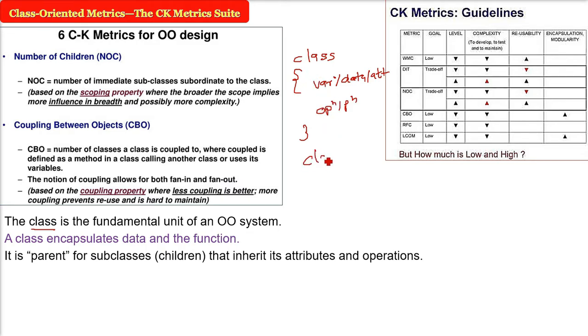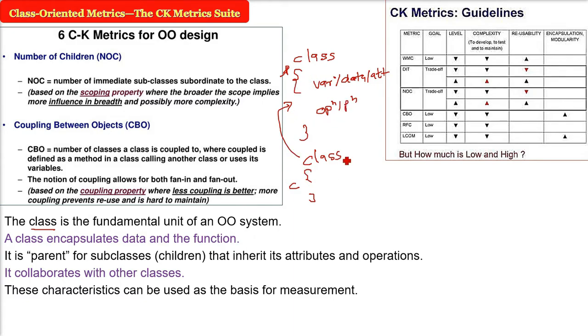There can be a parent class from where the subclasses can be inherited. Inheritance means taking the attributes and operations as is. There can be another class which can be a subclass of a superclass or parent, and these classes all collaborate with one another. So these characteristics can be used as the basis for measurement and metrics.